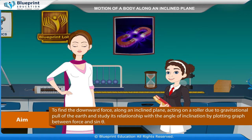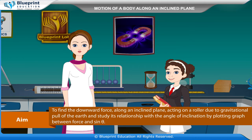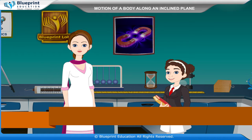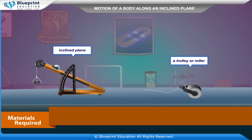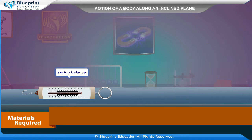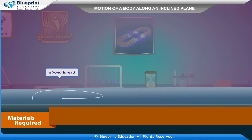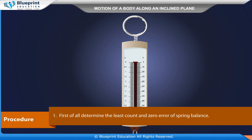Our aim is to find the downward force along an inclined plane acting on a roller due to the gravitational pull of the Earth and study its relationship with the angle of inclination by plotting a graph between force and sinθ. Materials required: an inclined plane, a trolley or roller, a pan, a weight box, a spring balance, a spirit level, strong thread, and a half meter scale.